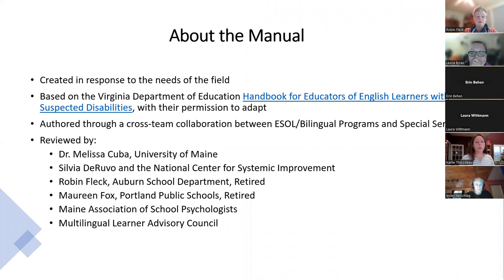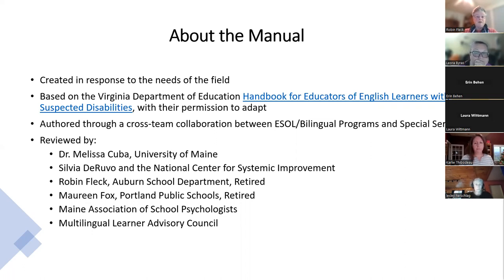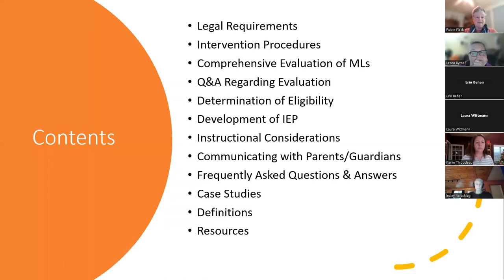For those who might be new: the manual was developed in response to the needs of the field. A lot of questions came from districts regarding students who are multilingual learners where there were suspicions of disability. We wanted to develop a clear process. It was a thoughtful process that took a few years, and the manual contains all of the components listed in great detail. We tried to make it user friendly — it's approximately 50 pages.